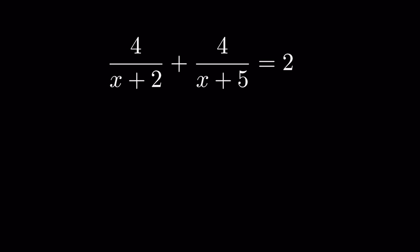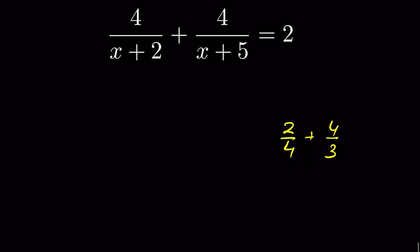To add a fraction, for example 2 upon 4 plus 4 upon 3, we need to find a common denominator. For that we find the LCD of the denominators. LCD of 4 and 3 will be 4 times 3, because they are not divisible by the same number, so we multiply both of them, giving 12.